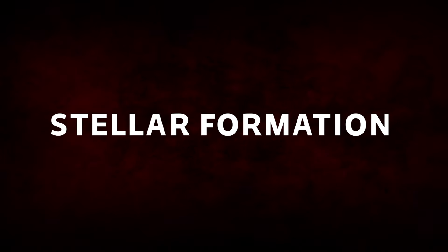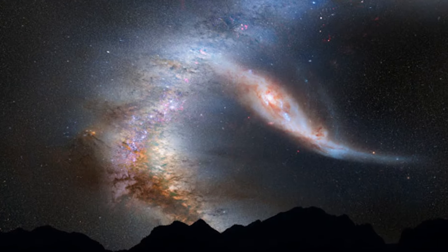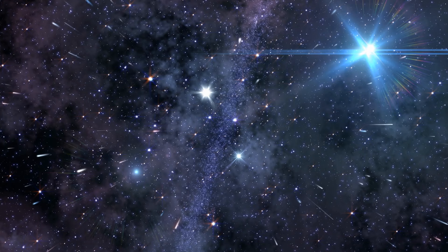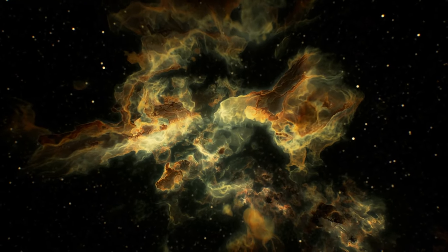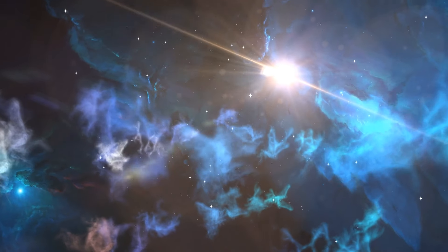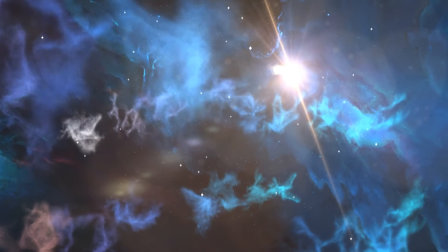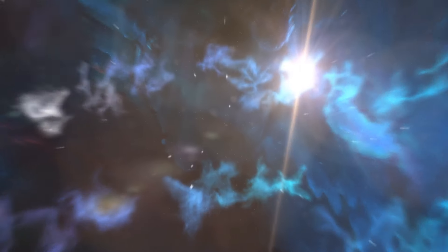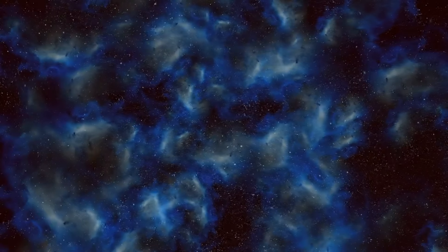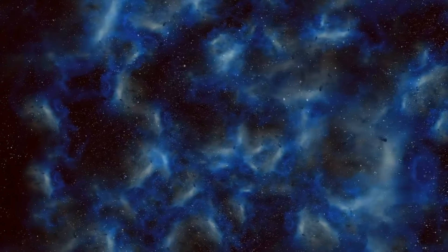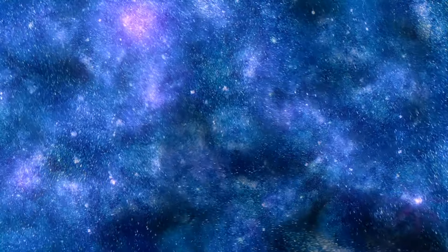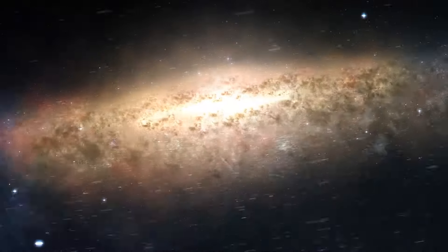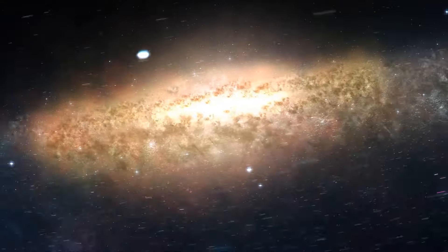Stellar Formation. Despite us being the neighbor to Andromeda galaxy, the processes involved in star formation are not fully understood. Stellar formation is the process by which dense regions within molecular clouds collapse under their own gravity to form new stars. These clouds consist primarily of molecular hydrogen along with trace amounts of other elements and compounds. Gravitational instabilities within these clouds can lead to the formation of dense pockets of gas and dust where star formation occurs.